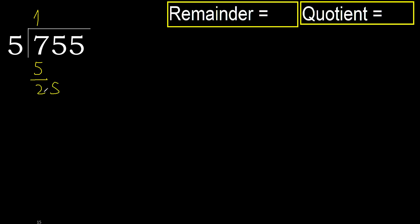Next: 25. 5 multiplied by 5 is 25. It is not greater. Subtract.